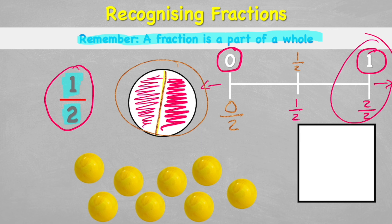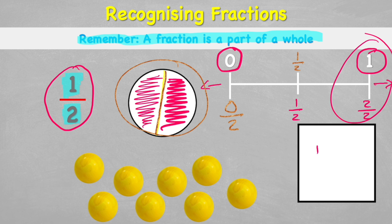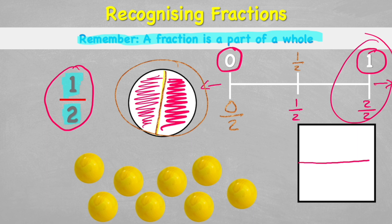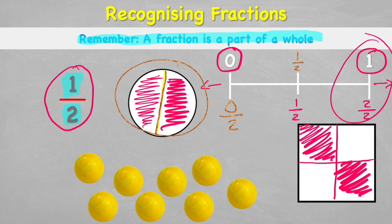Circles are not the only way we can show half. Looking at a square, I could cut a line down the middle — half on either side. Or I could cut diagonally, and I'd have one half on either side. Or I could cut the square in half and half again, and the two highlighted squares together still show half.